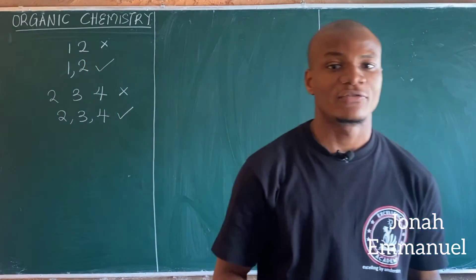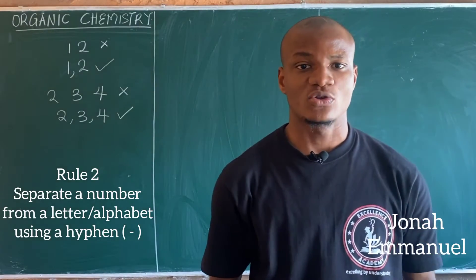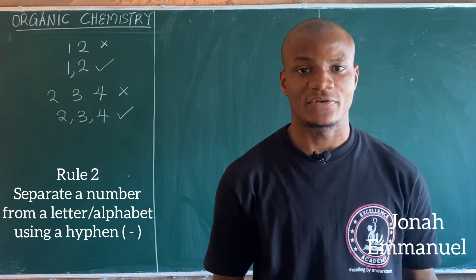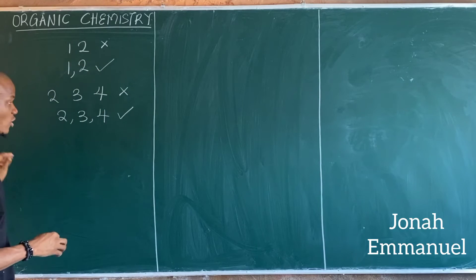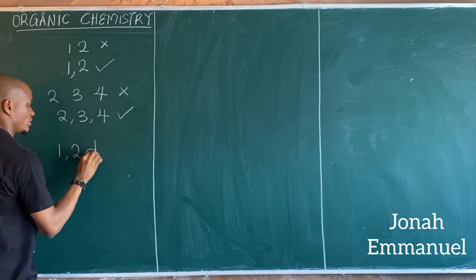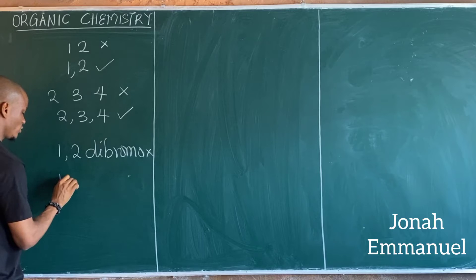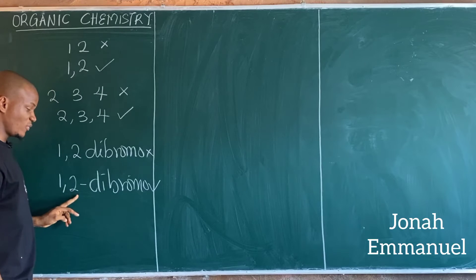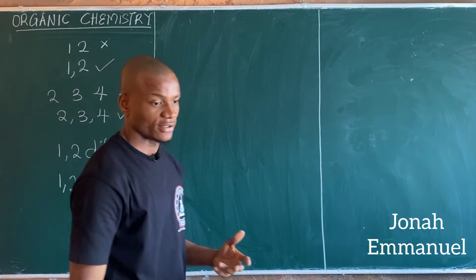Rule two: separate a number from an alphabet using a hyphen — or you could say, separate a word or an alphabet from a number using a hyphen. For instance, if I want to write '1,2-dibromo', you don't write '12dibromo' — that is wrong. The correct way to write this is '1,2-dibromo'. You separate a number from an alphabet using a hyphen. That's the second rule of writing the names of organic compounds.